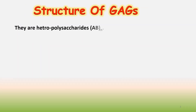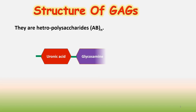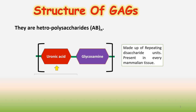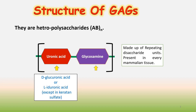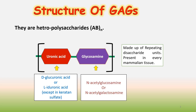Now we will discuss the structure of GAGs. They are heteropolysaccharides and their formula is (AB)n. The structure is composed of disaccharides made up of uronic acid and glycosamine. They are present in every mammalian tissue. Glucuronic acid or L-iduronic acid could be present instead of uronic acid, except in keratan sulfate, while N-acetylglucosamine or N-acetylgalactosamine could be in place of glycosamine.